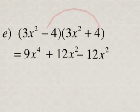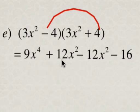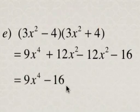Then we're going to multiply the last terms, so negative 4 times positive 4 is minus 16. And we can simplify 12x squared minus 12x squared, which is 0, so this simplifies to be 9x to the power of 4 minus 16.